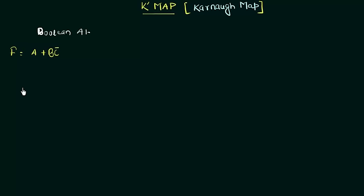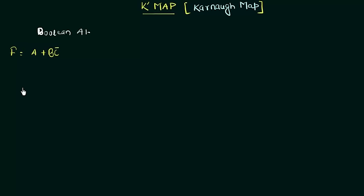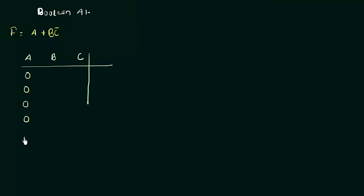Let's start making our truth table. We have three variables a, b, c involved. When we have three variables, there are eight possible combinations. Let me write down the eight combinations — if you already know how to do this, pause the video and try it yourself. The combinations are: 0 0 0, 0 0 1, 0 1 0, 0 1 1, 1 0 0, 1 0 1, 1 1 0, 1 1 1.